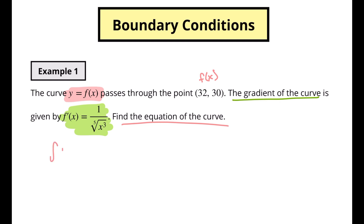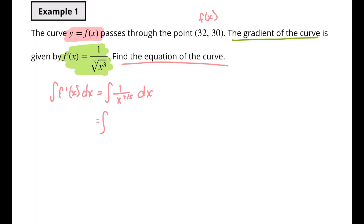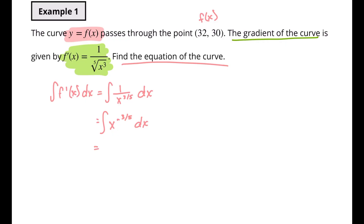We'll start by integrating f prime of x with respect to x, which equals the integral of 1 over x to the 3/5 power with respect to x. All I did was change the radical into an exponent. I don't really know how to integrate a fraction, so I'm going to change that into a negative exponent and make it a power rule. So I'm going to integrate x to the negative 3/5 power with respect to x. Dropping the integral sign, I get 1 over (negative 3/5 plus 1) times x to the (negative 3/5 plus 1) plus C. That gives 1 over (2/5) x to the 2/5, which ultimately becomes 5/2 x to the 2/5 power plus C.